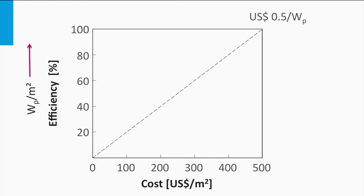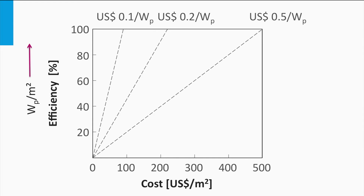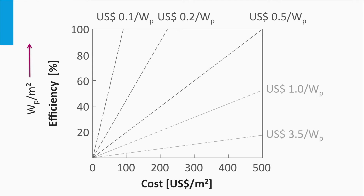The cost price per watt peak corresponds to the cost price of the energy generated by the solar cell. In this example, the dashed line represents half a dollar per watt. If the slope of these dashed lines is very steep, the cost price per watt is low, whereas when the slope becomes less steep, the cost price per watt peak is significantly higher. To compete with other energy sources, you would like your PV technology to overlap with the steepest lines in this graph.